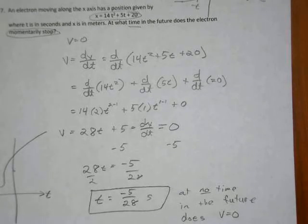So now I'm going to just solve for t, solve for that time, at what time in the future. Minus 5 from each side. So 28t equals negative 5. And divide each side by 28. T equals negative 5 over 28. And that will be in seconds, but I told you you didn't have to worry about the units on this problem.